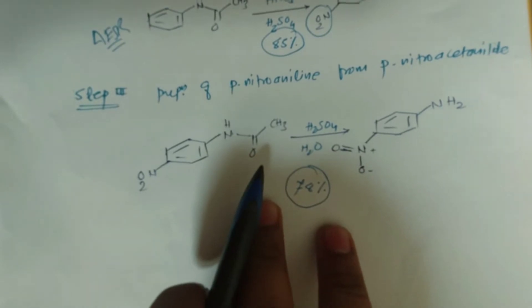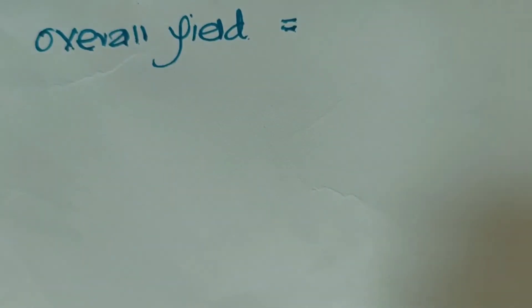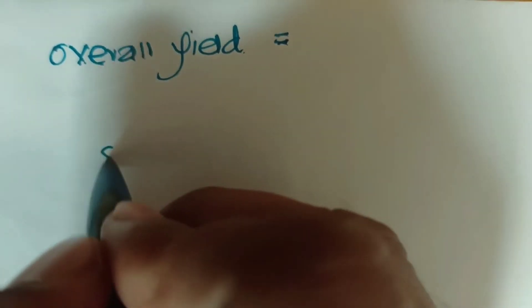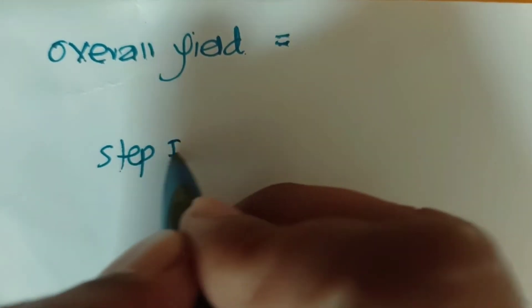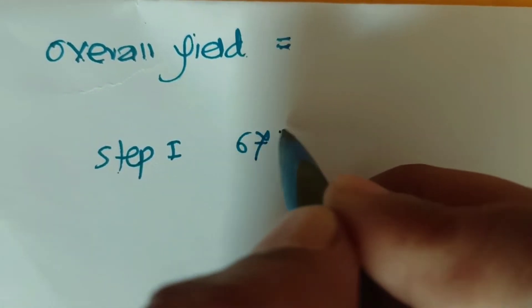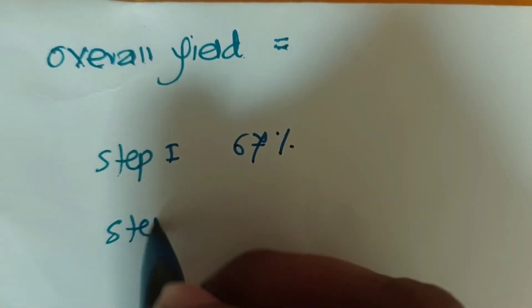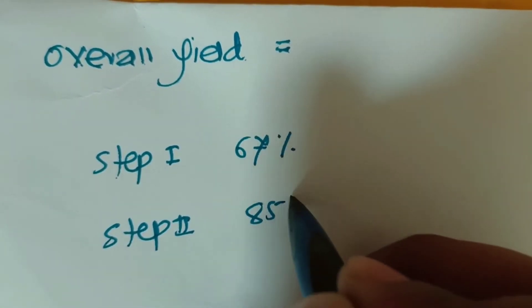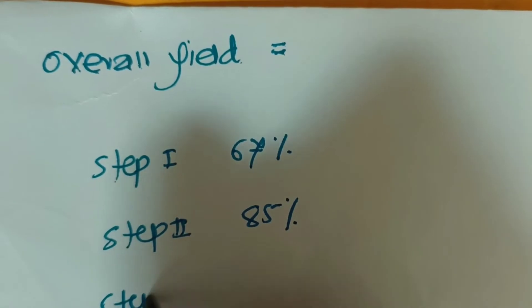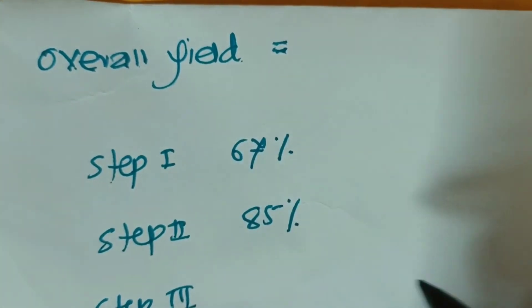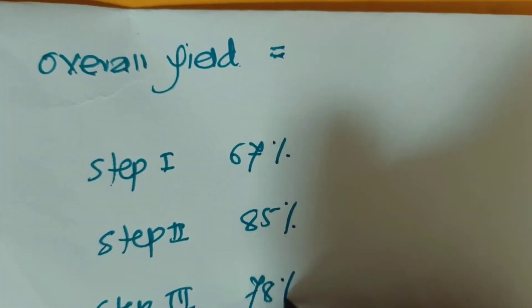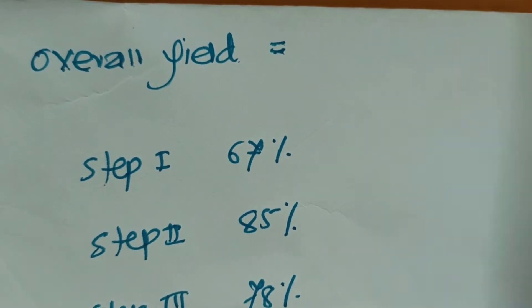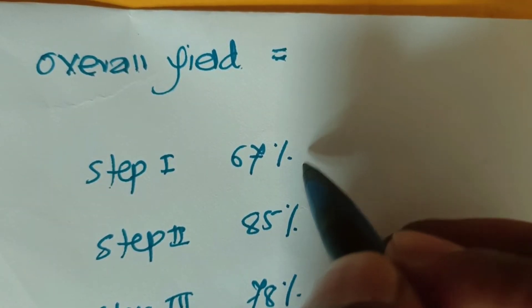In step 1, the yield is 67%. In step 2, the yield is 85%, and in step 3, the yield is 78%. What we can do now is convert these yields into simplified numbers.